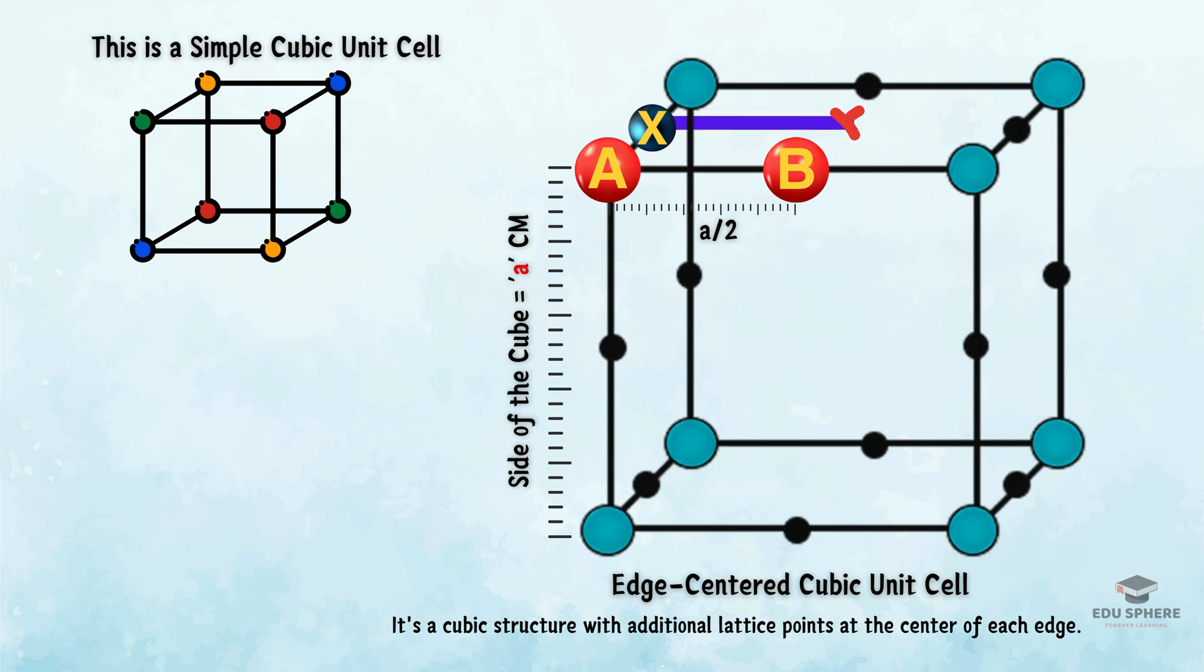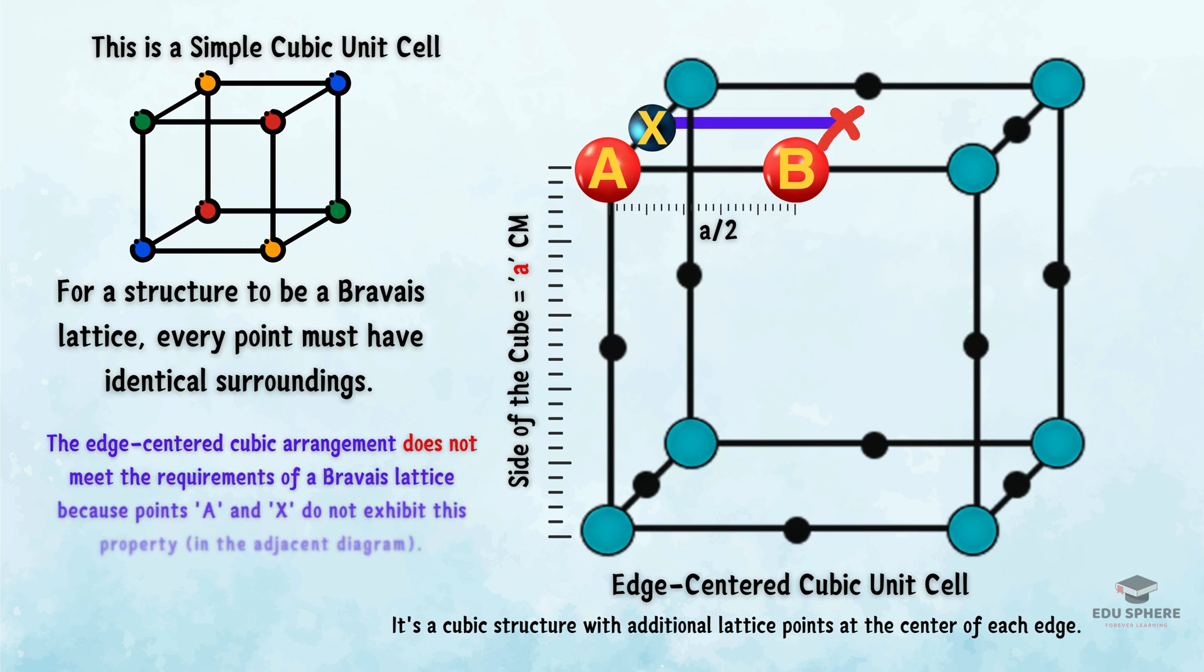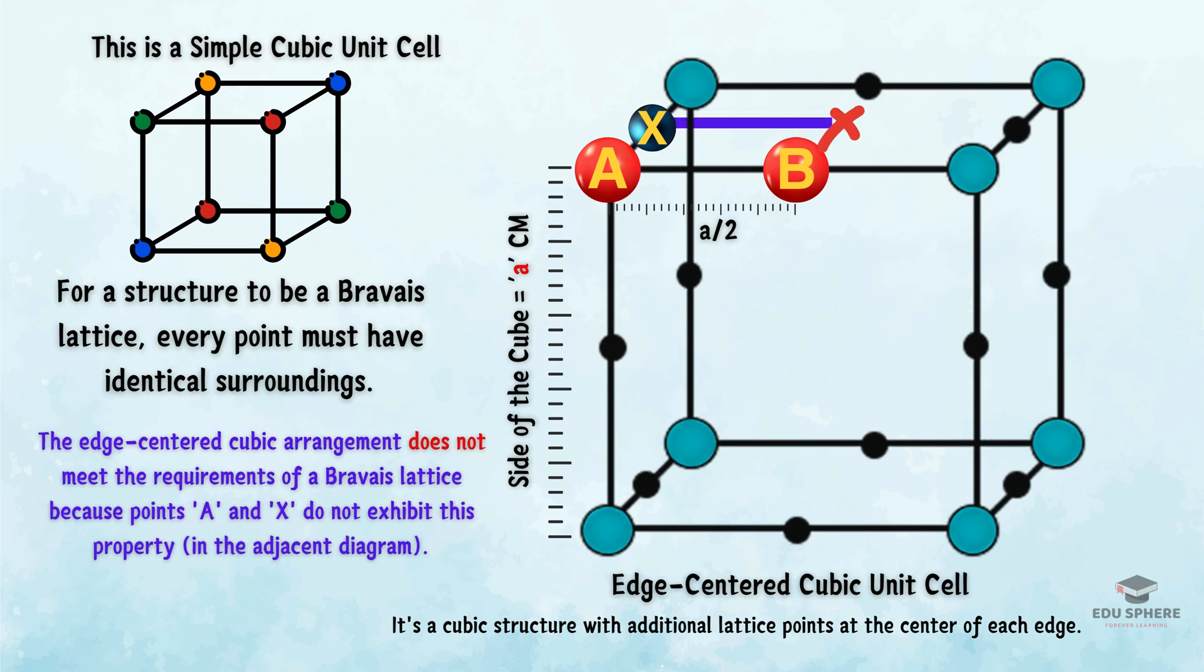This inconsistency is the crux of the issue. For a structure to be a Bravais lattice, every point must have identical surroundings. In our example, since the points A and X do not share this property, the edge-centered cubic arrangement fails to meet the criteria of a Bravais lattice.